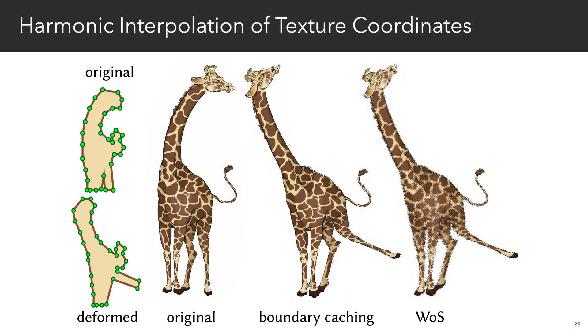In practice, the smoother solution profile is beneficial for visual tasks, such as harmonic interpolation of texture coordinates in a deformed cage as shown here.